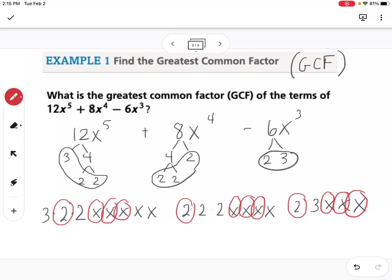So I'd write down what I circled that was common through all of them. They all had a 2, and they all had 3 x's, so that would be x cubed. So the GCF for that expression would be 2x cubed.